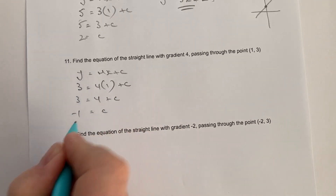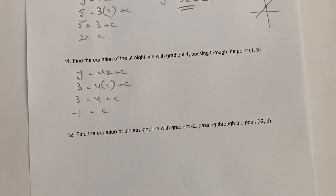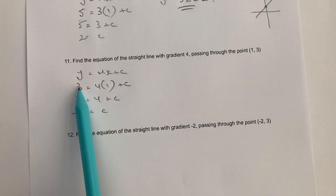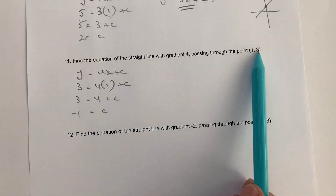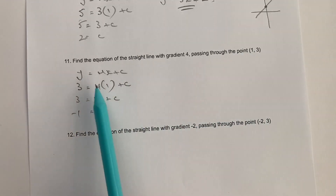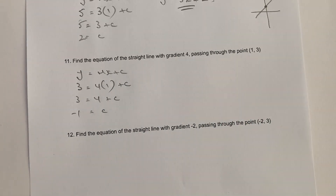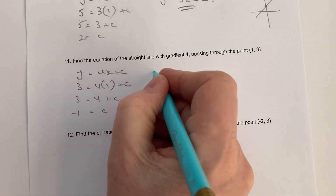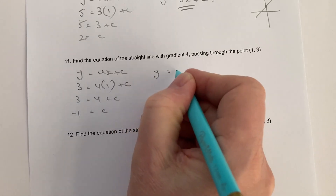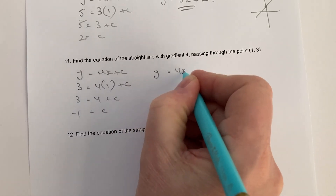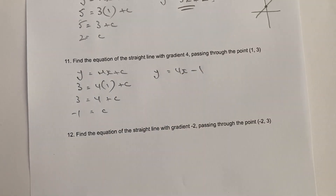So c is going to equal minus one if I subtract four from both sides. Bearing in mind, this is the value of y and this is the value of x. So now I can write the full equation of the line as y equals four x minus one.